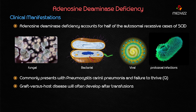The disorder commonly presents with Pneumocystis carinii pneumonia and failure to thrive. Pneumocystis carinii pneumonia is more commonly seen in AIDS patients but is also seen in immunodeficient individuals because the patient exhibits dysfunctional T cells as well as B cells.